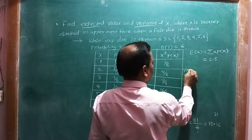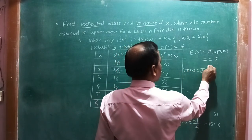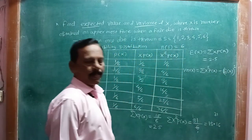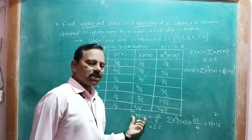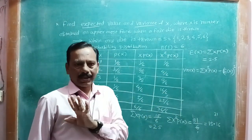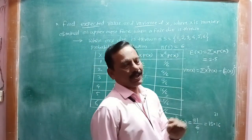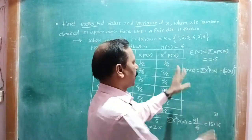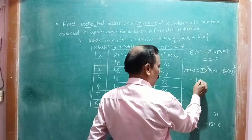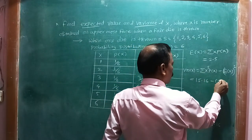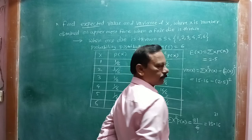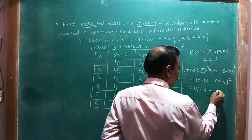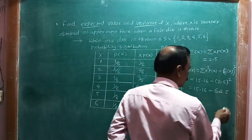The variance formula is: Var(X) = E(X²) - [E(X)]². We have E(X²) = 91/6 ≈ 15.17, and E(X) = 2.5, so [E(X)]² = (2.5)² = 6.25. Therefore Var(X) = 15.17 - 6.25 = 8.92 (approximately 35/12).